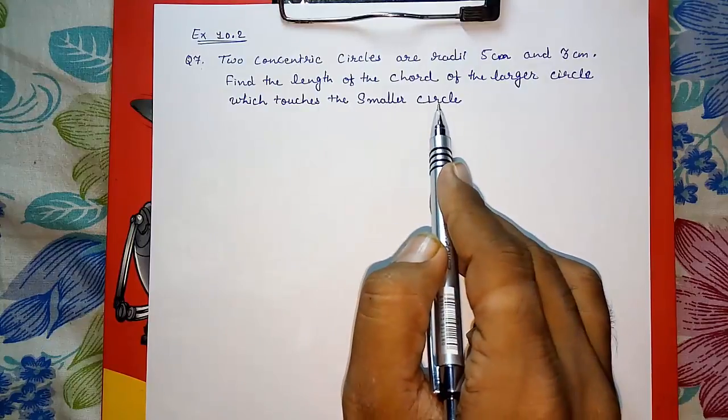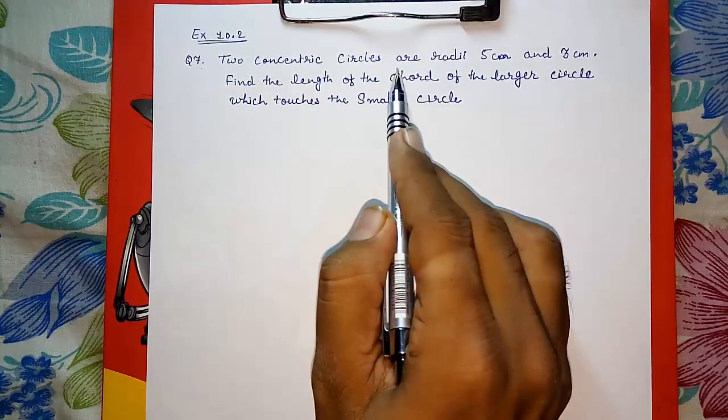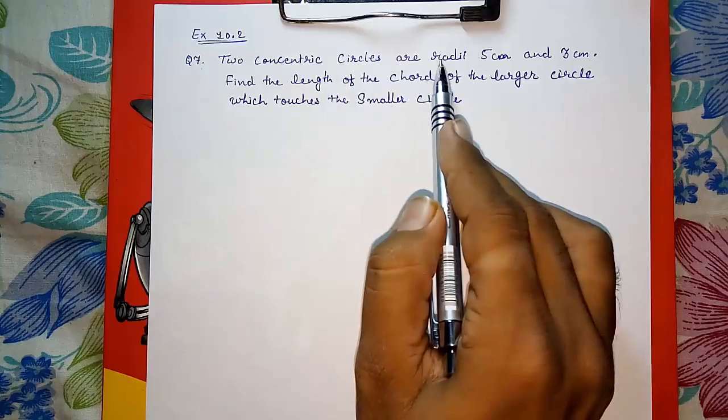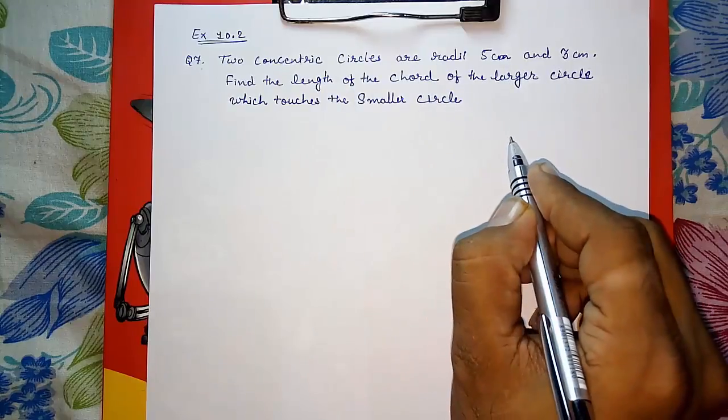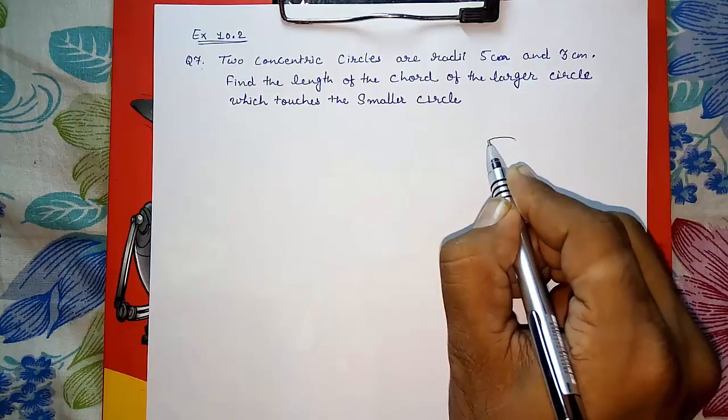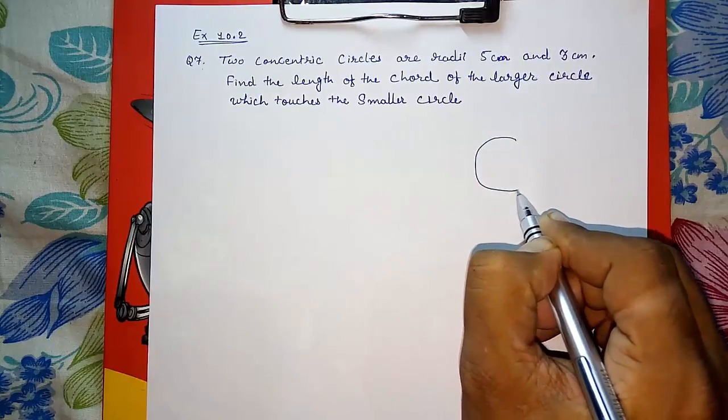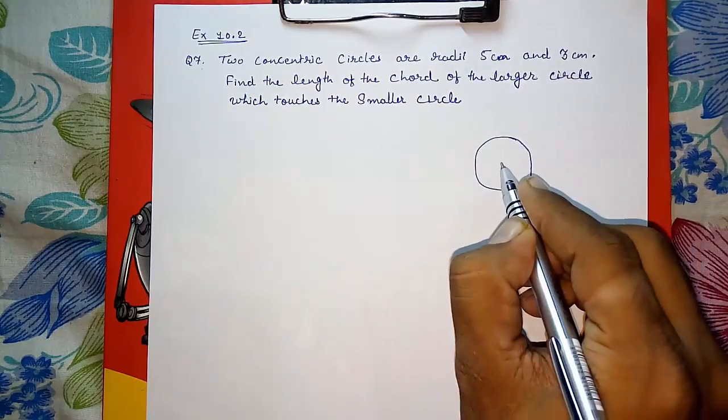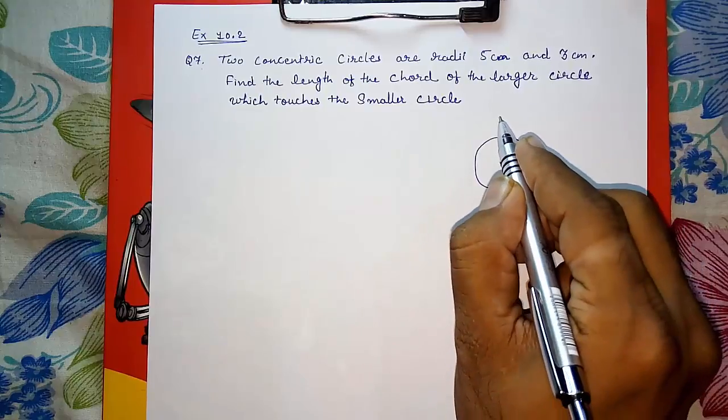Two concentric circles are there with different radius. Look here, first I am drawing two concentric circles. First you should know what is a concentric circle - two circles having the same center point.